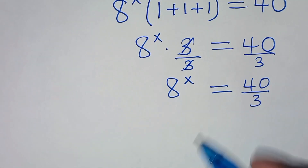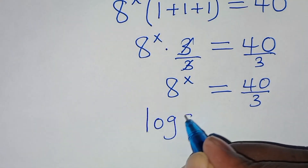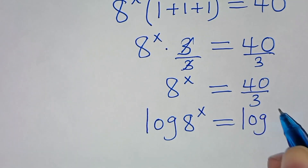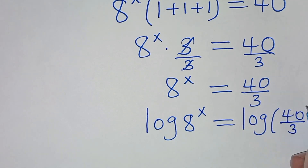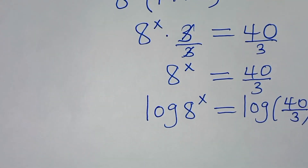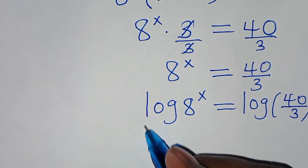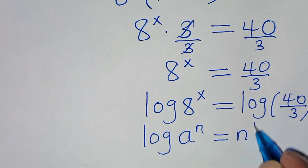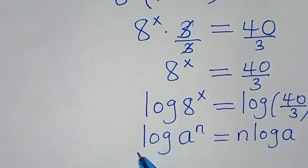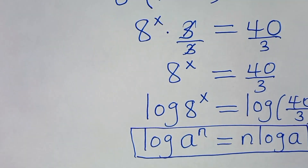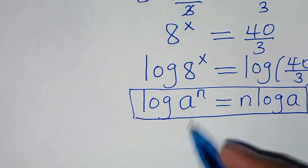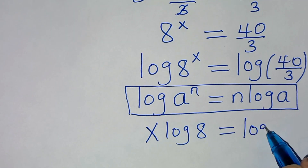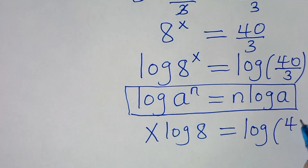The next step: to solve for x, we introduce logarithm on both sides. So we have log of 8 to the power x equals log of 40 over 3. Now, log of 8 to the power x is in the form of log of a to the power n, which we can express as n times log a. Applying this power rule property of logarithm, log of 8 to the power x becomes x times log 8, and this equals log(40/3).